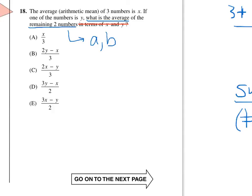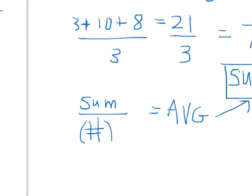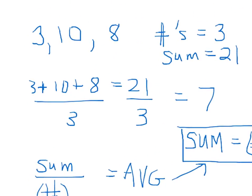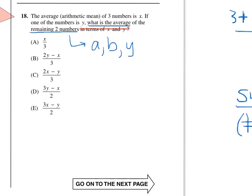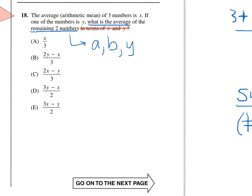Okay, let's go back and read the beginning of the question. The average arithmetic mean of three numbers is x. If one of the numbers is y, well, now I have my three numbers, just like over here my three numbers were 3, 10, and 8. I now have three numbers, a, b, and y, and their average is supposed to be x. So if the sum equals the number of numbers times the average, in our example, this is a plus b plus y equals 3 times x, because the average is x.